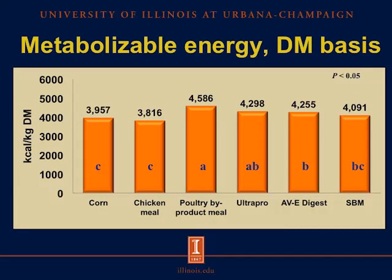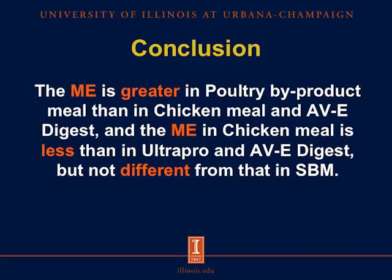In the case of metabolizable energy, also on a dry matter basis, we observed the same pattern as for digestible energy — it was greater in poultry by-product meal compared with corn, chicken meal, ABE digest, and soybean meal. The fact that DE and ME values in these ingredients are slightly greater than or not different from soybean meal indicates that dietary energy concentration will not be compromised if chicken meal, poultry by-product meal, ultra-pro, or ABE digest are used. The conclusion for this first experiment is that ME concentration is greater in poultry by-product meal than in chicken meal and ABE digest, and ME in chicken meal is less than in ultra-pro and ABE digest but not different from that in soybean meal.